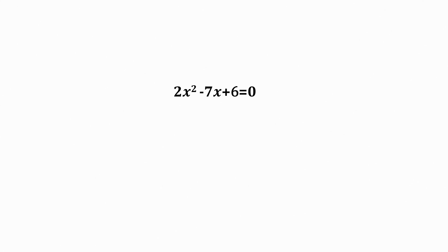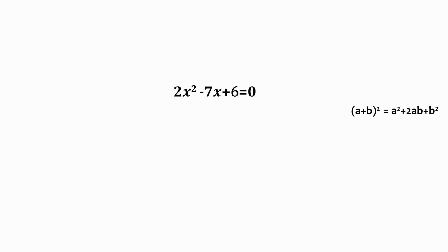Before we move further, let me write the formula for (a + b)², which is equal to a² + 2ab + b². Because we have been trying to solve the equation by completing a square, we need one side of the equation to come in the form of a² + 2ab + b².